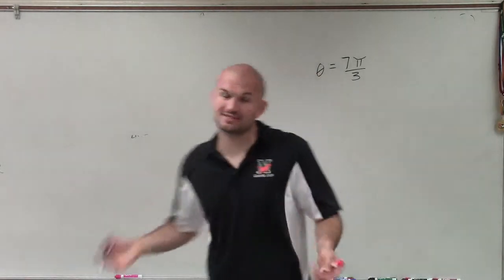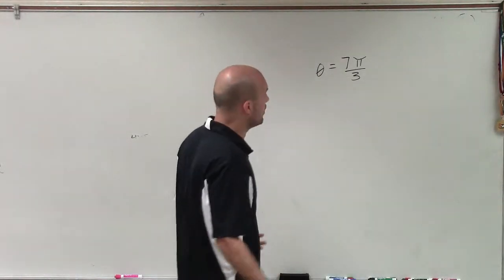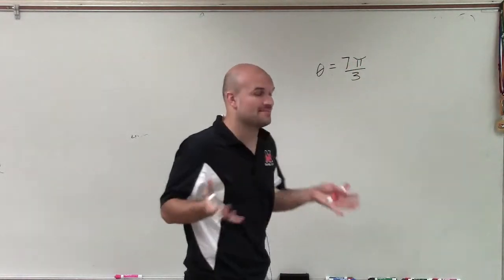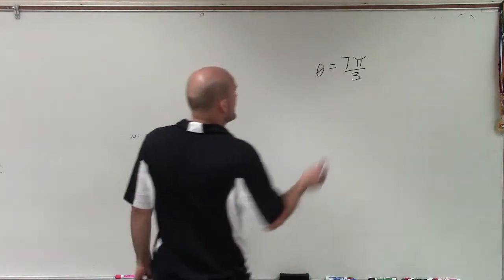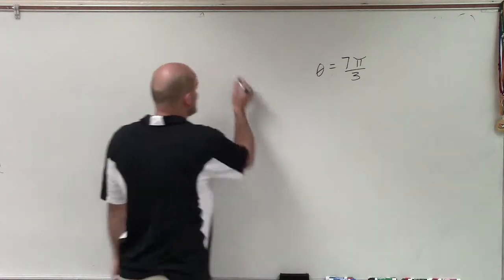Welcome. In this case, we need to determine our two coterminal angles, one positive and one negative. Remember, when we're determining coterminal angles, that means we have angles that have the same exact initial and terminal side. We look at this angle, and we know that since it's 7π/3, that's going to be over a revolution.